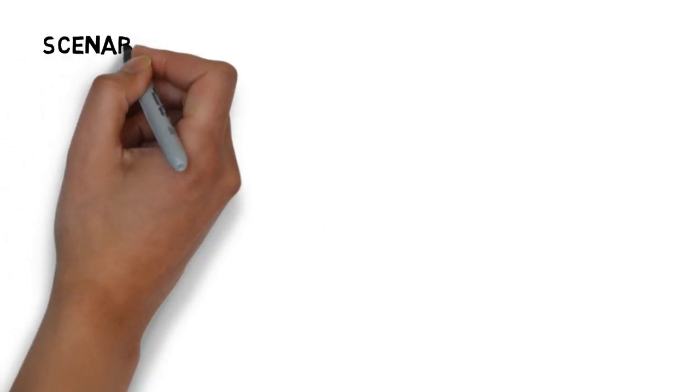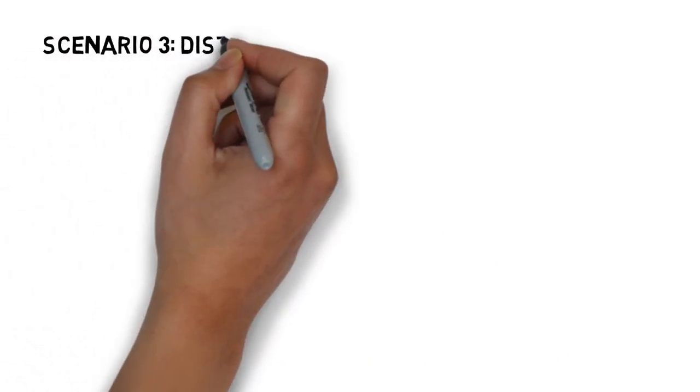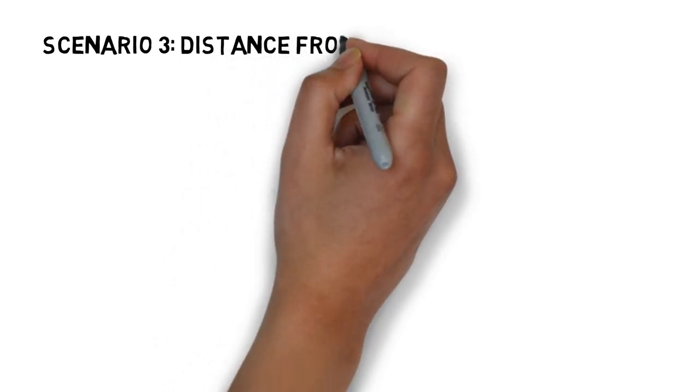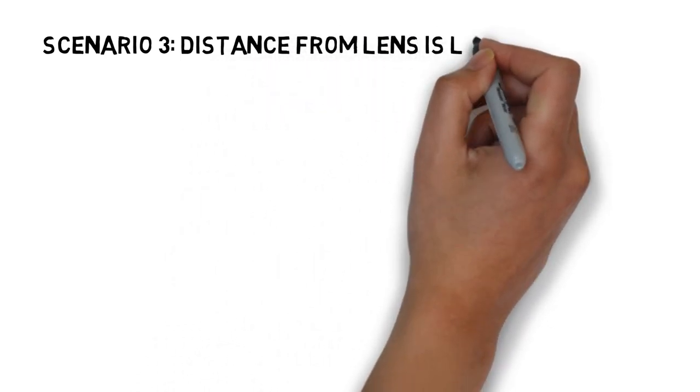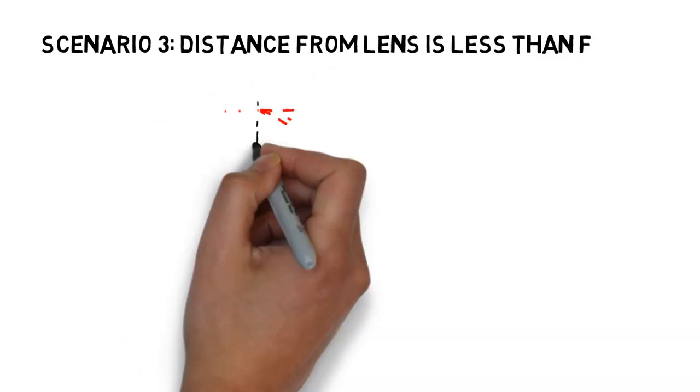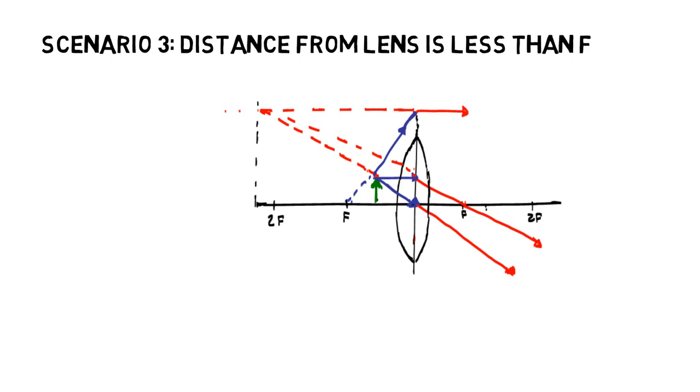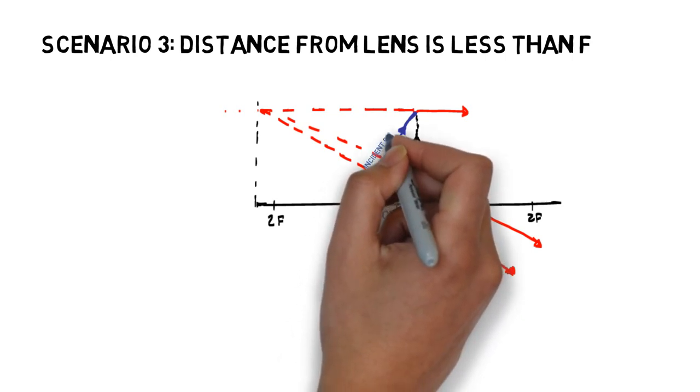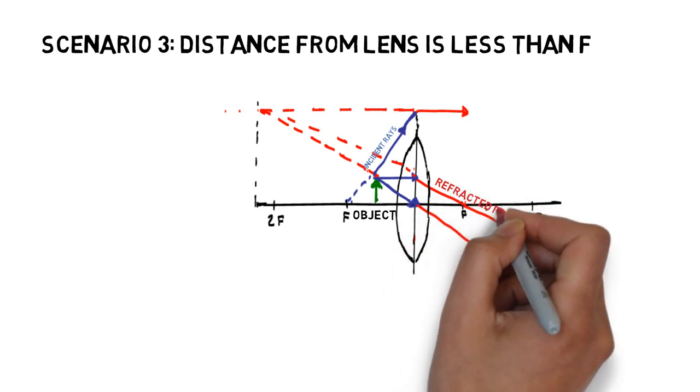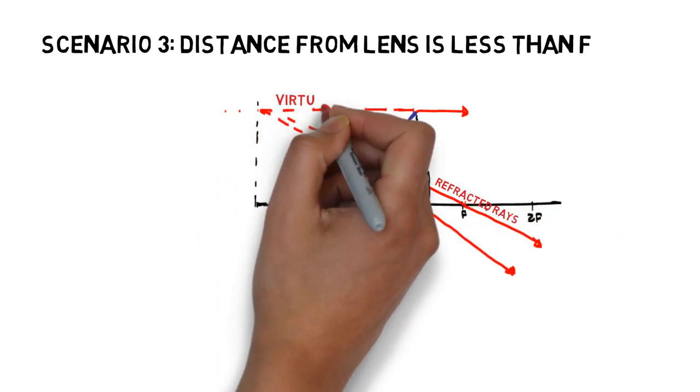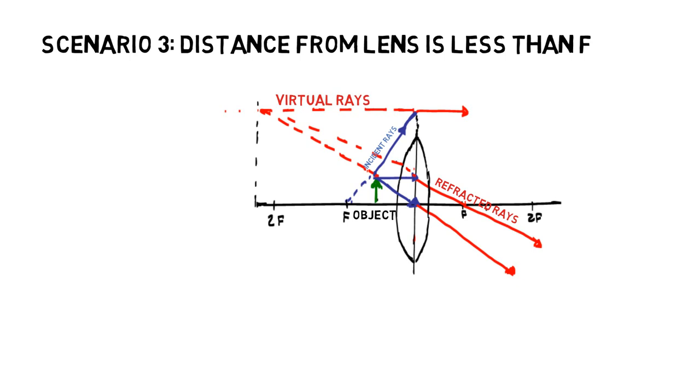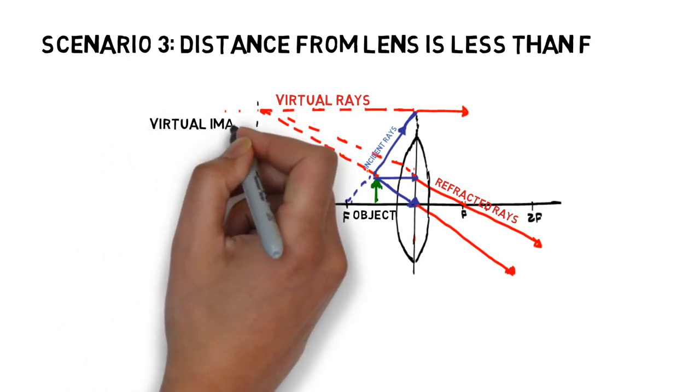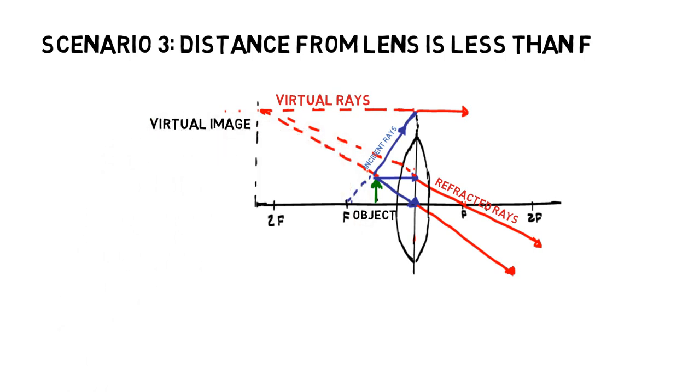In our third scenario, which is a bit more complicated, the object distance from the lens is less than the focal point. Here we have another diagram, where we once again have our object, our incident rays, and our refracted rays. But this time we have virtual rays, and a virtual image. So why is the image formation in this scenario different from the rest?